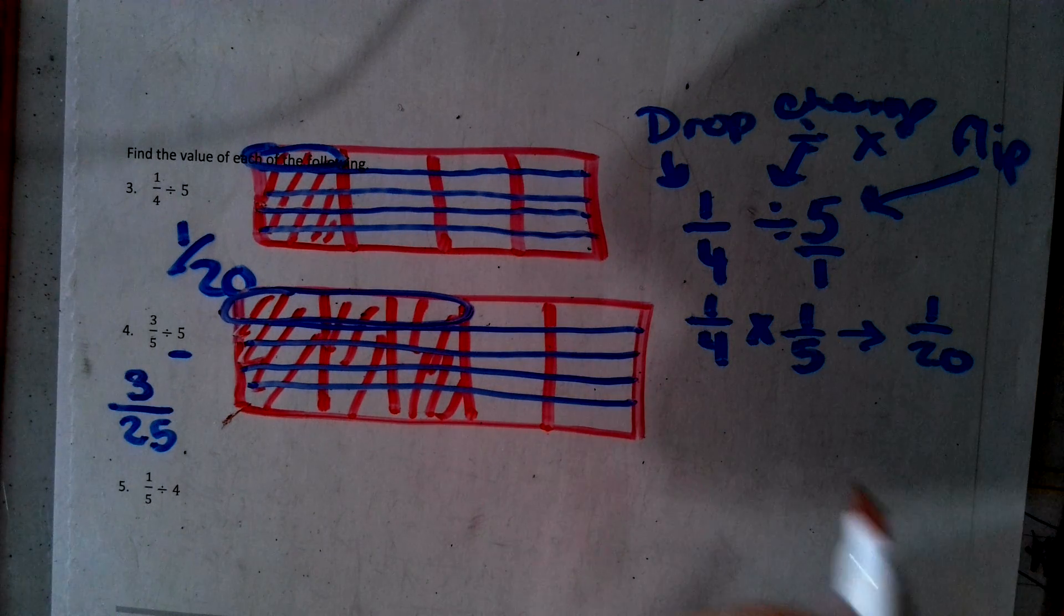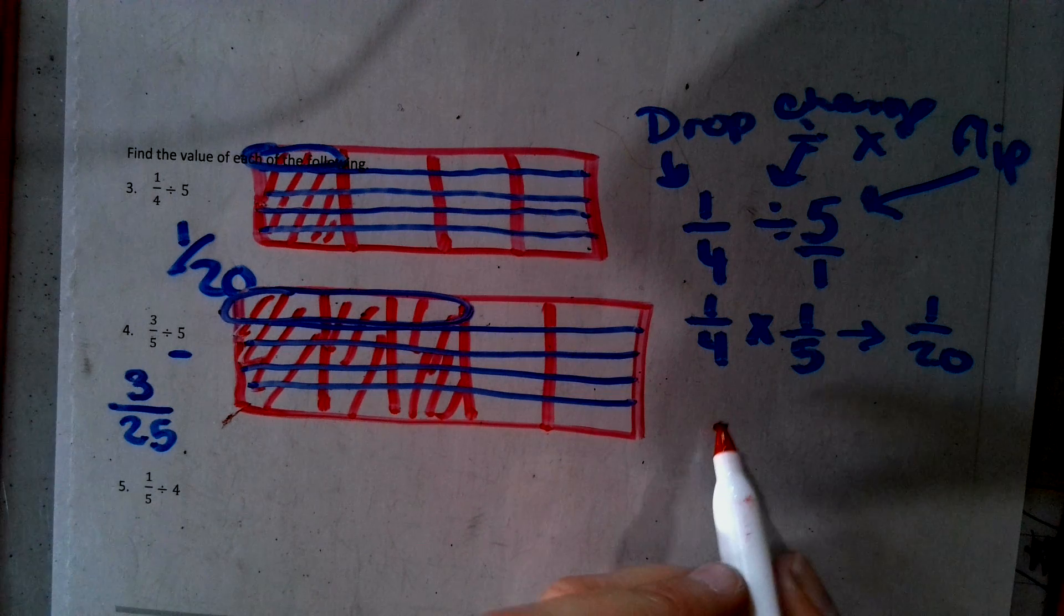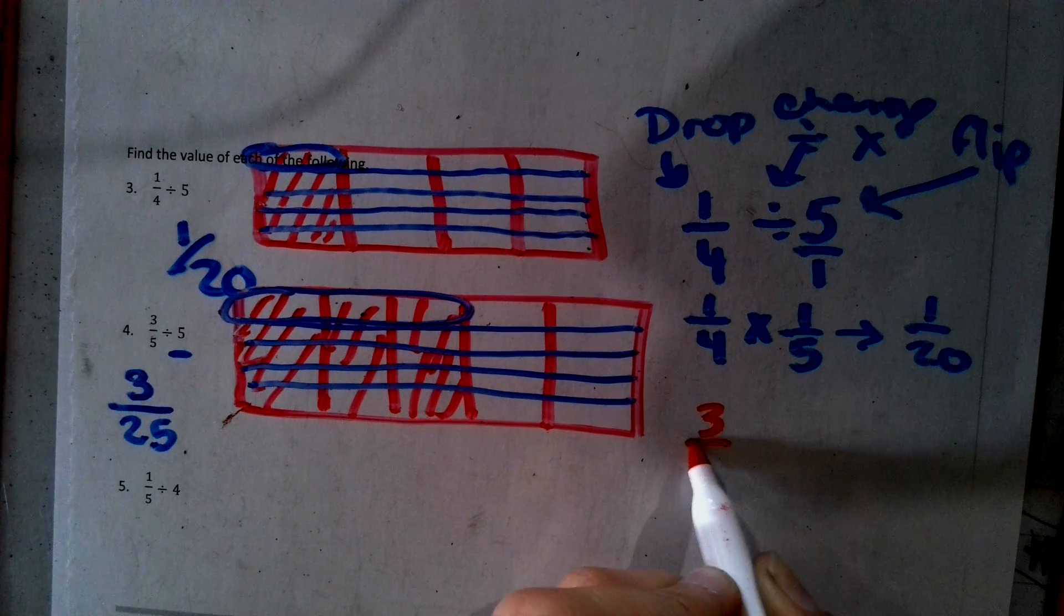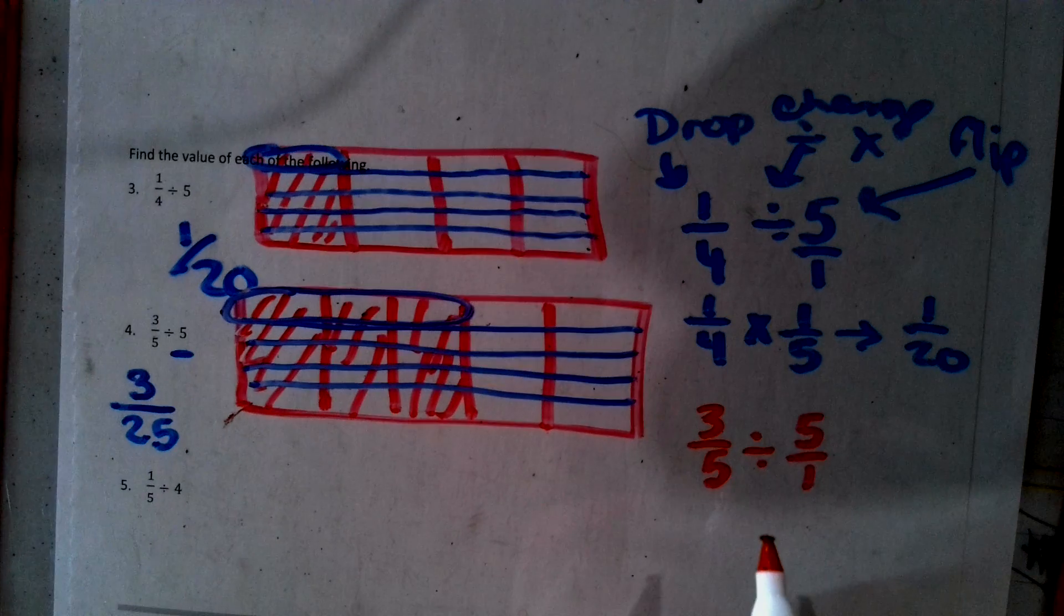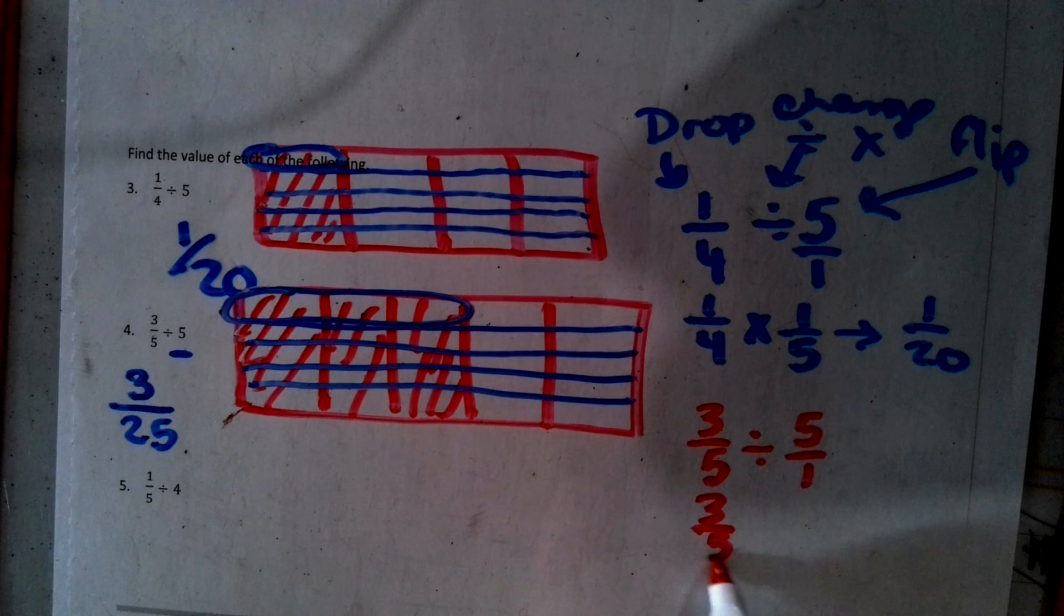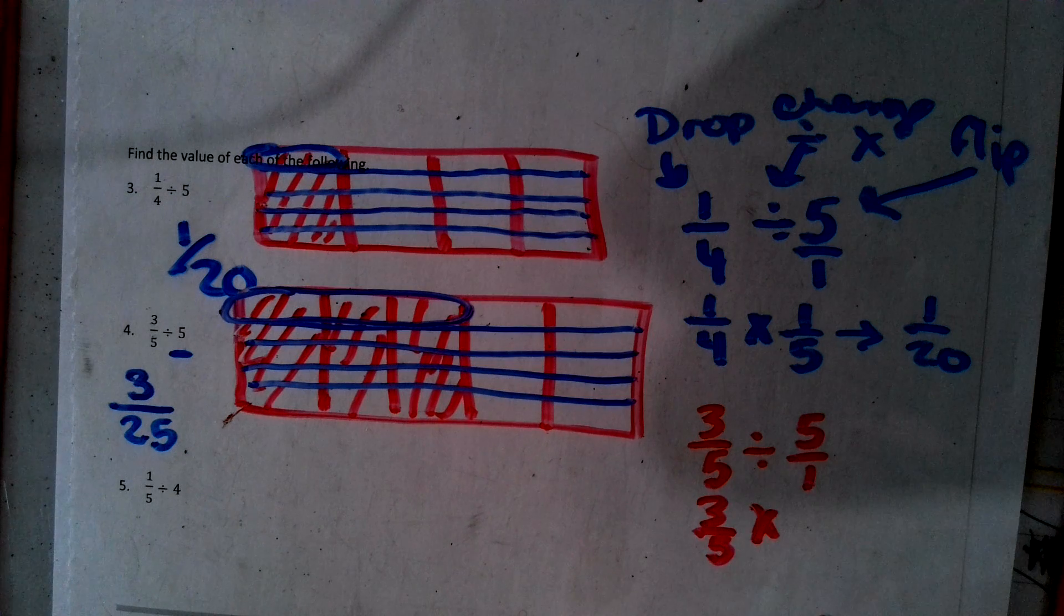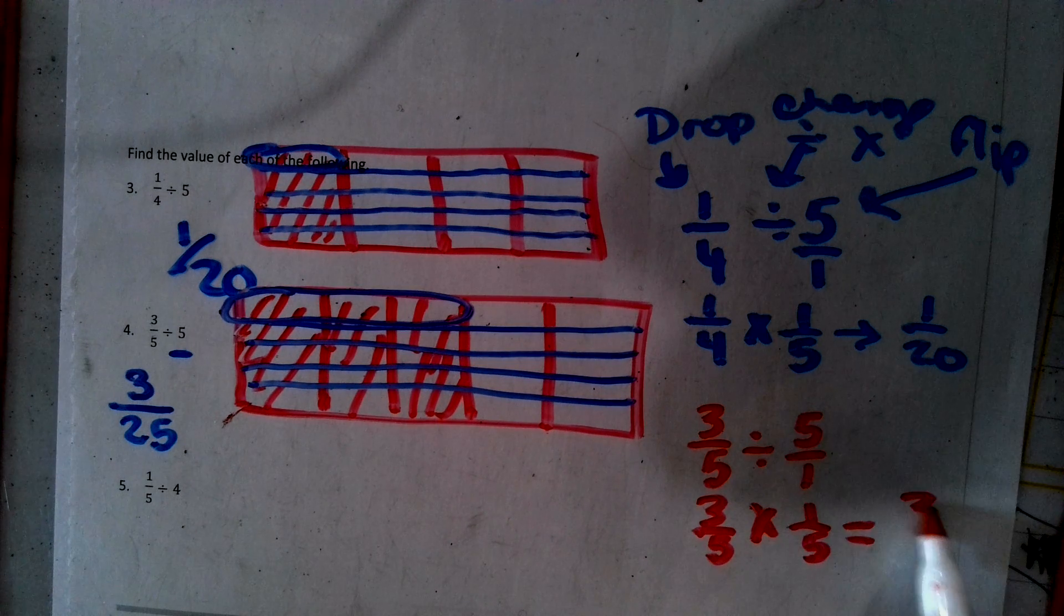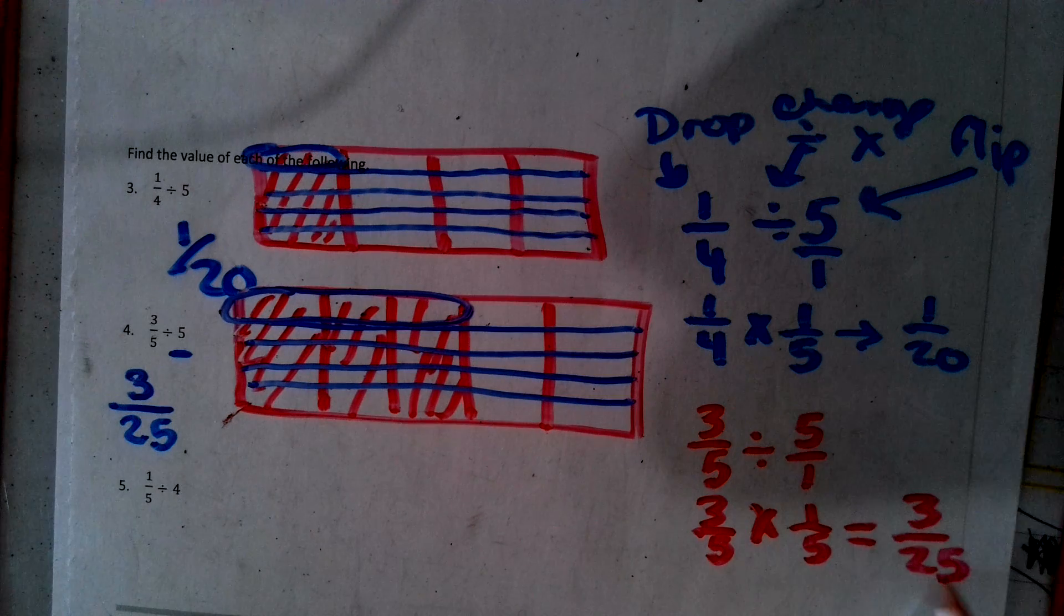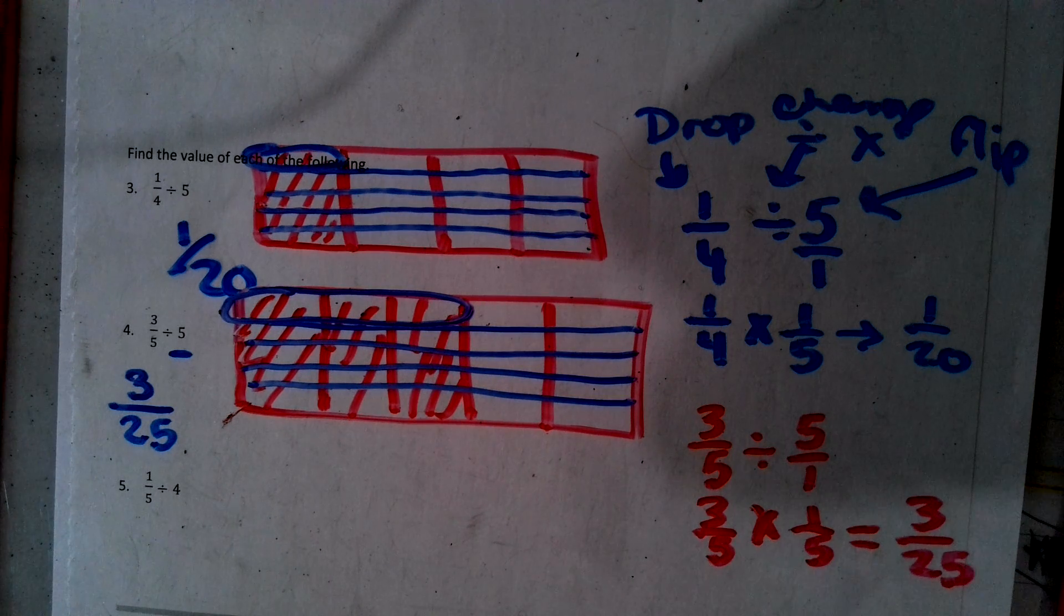Now let's look at it as a drop-change-flip situation. We have 3/5 divided by five over one. We drop it. We change it. We flip it. We go straight across. We get 3/25. This is standard algorithm.